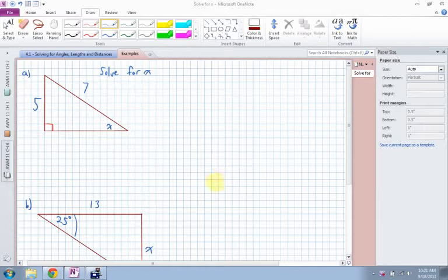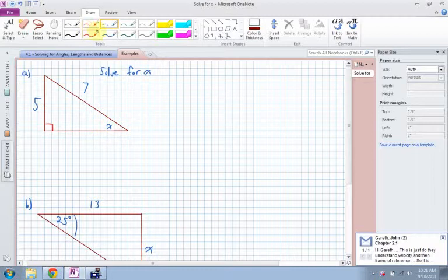Alright, so for part A we're supposed to solve for x. X is down here, and x is an angle. So in order to solve for the angle, first thing we need to do is look from our angle.